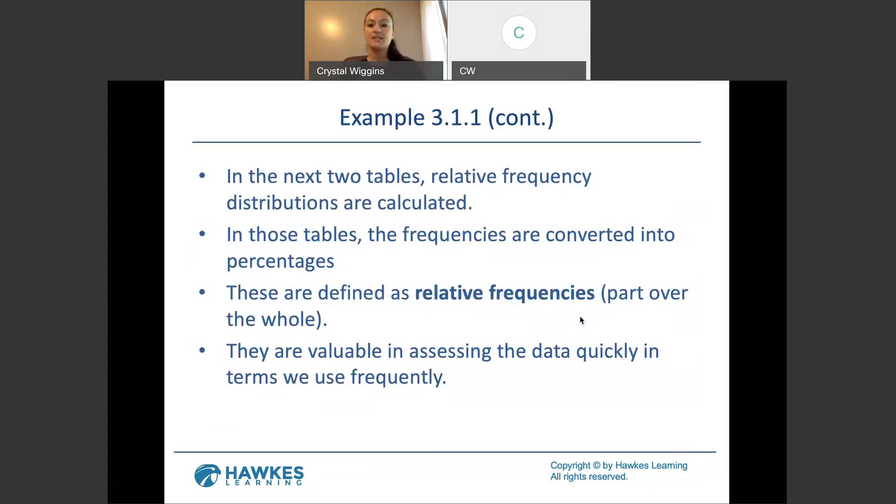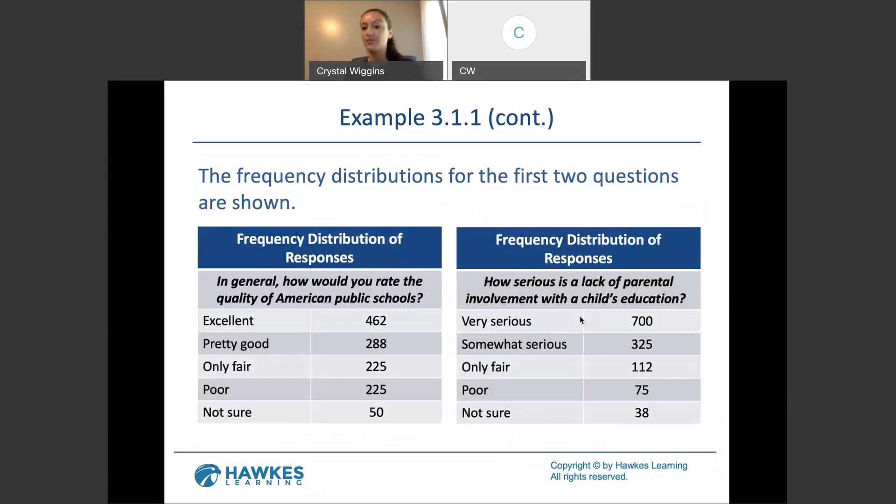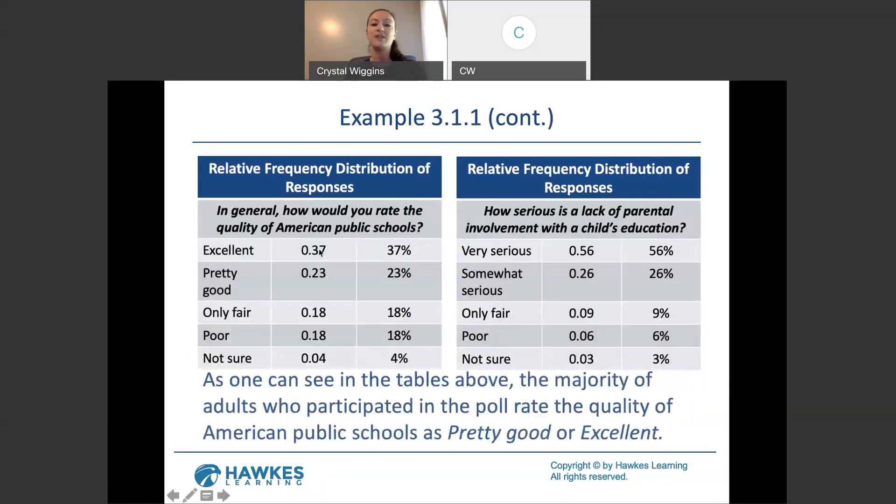They are valuable in assessing the data quickly in terms of making a quick factor statement. So, take a look at the same two tables, but this time we took the counts and divided by 1250. So, if you recall, let's go back real quick. Excellent. There was 462 out of 1250 responses. So, we would take 462 divided by 1250 and that's where we get 0.37. In order to change a relative frequency into a percent, you take the decimal place. Well, technically you're multiplying by 100. The two zeros tell you, okay, I'm multiplying. That means the decimal place is going to move to the right. And that's how we get 37% of the responses said excellent when rating the quality of American public schools. A little less than a quarter said pretty good. Less than 20% are only fair or poor and 4% said they're not sure.